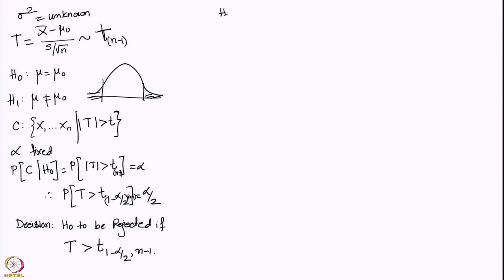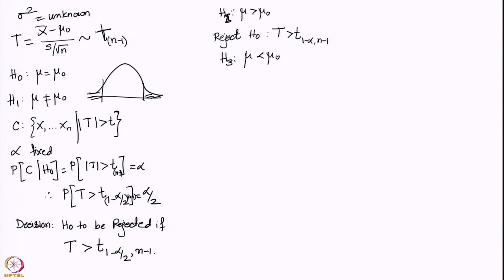Similarly, if we consider the alternative H2 that mu is greater than mu-zero, the decision is: reject H0 if T is greater than t subscript (1 minus alpha) with n minus 1 degrees of freedom. For the third alternate hypothesis that mu is less than mu-zero, the decision is: reject H0 if T is less than t subscript alpha with n minus 1 degrees of freedom.